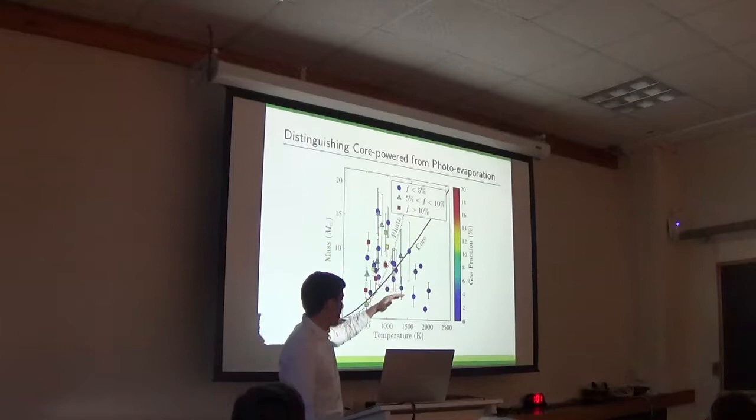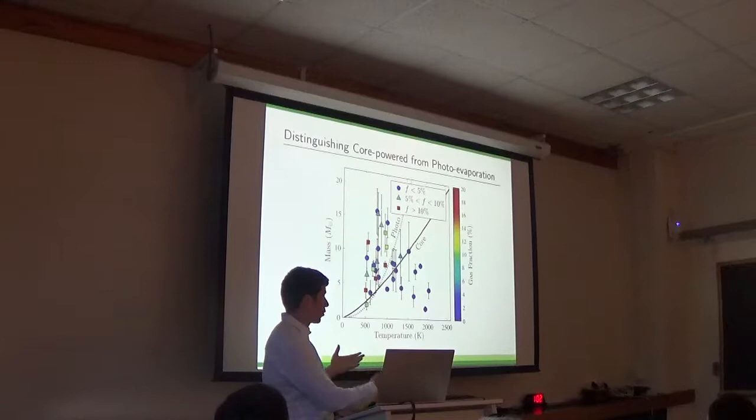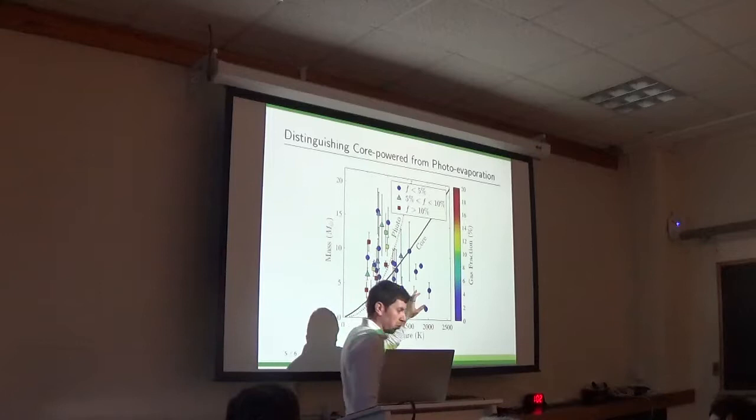So here we have a plot of a planet's mass versus its equilibrium temperature, which basically measures the distance from the star. So both theories, which are these lines, these black lines, predict that planets that are massive or cold, meaning above the line, are expected to keep an atmosphere. Whereas planets that are hot or light, meaning here, are expected to lose their atmospheres.